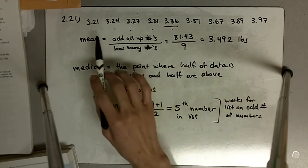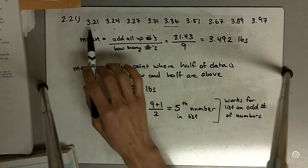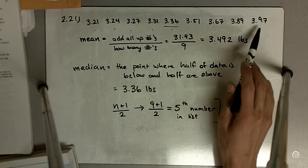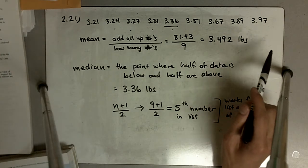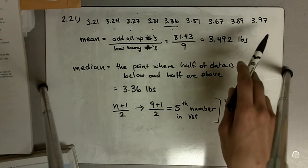In general, all of our numbers range between 3.21 and 3.97. And so 4 pounds per day is higher than the very largest number that we have in our data set.